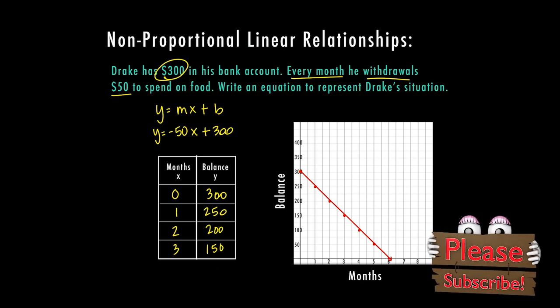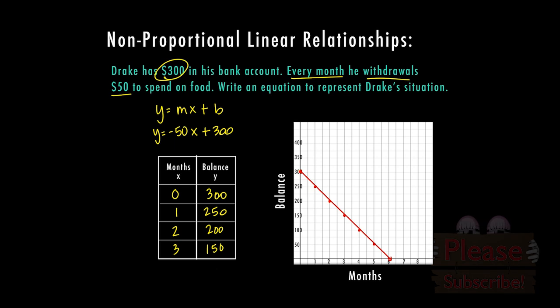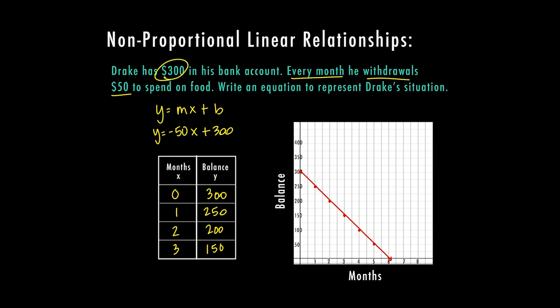I can see here when I connect my points, that it is a constant rate of change, but I did not start at zero, zero. So it is a non proportional linear relationship. I did put an arrow at the end, even though it stops at six, because you can have a negative balance in your account. So if he kept taking out money that he doesn't have, he's going to end up with a negative balance. You do want an arrow at the end of your line as if it continues.